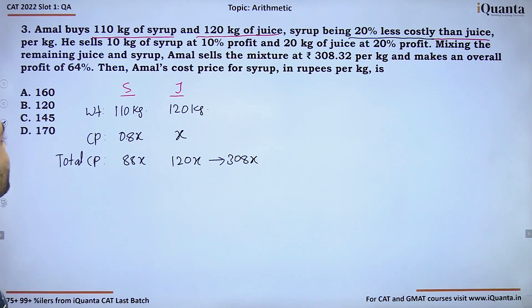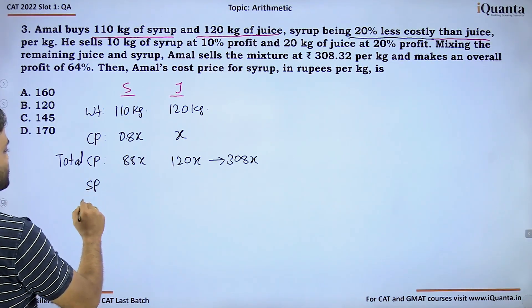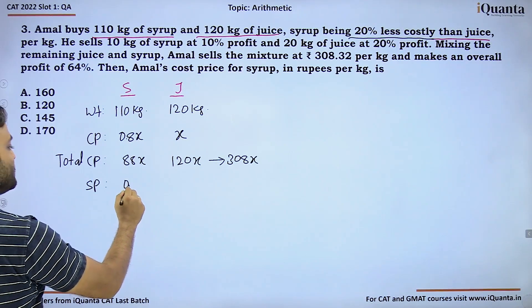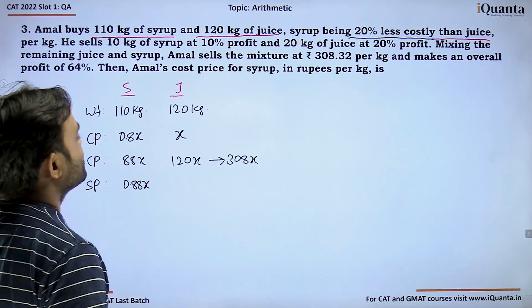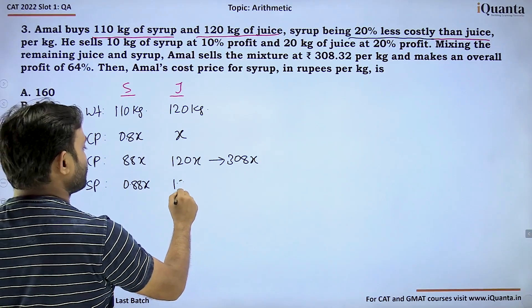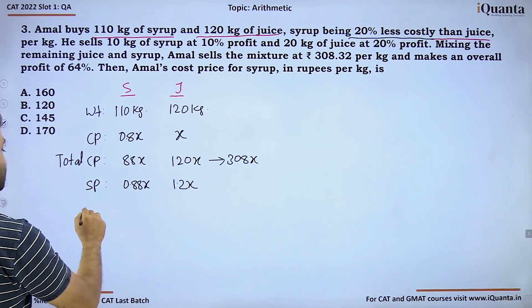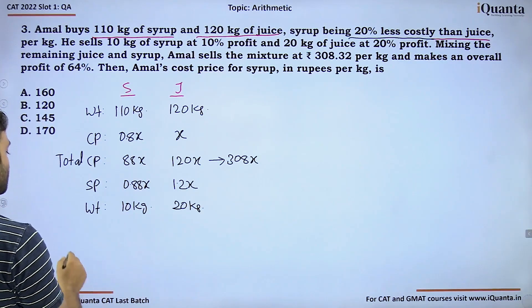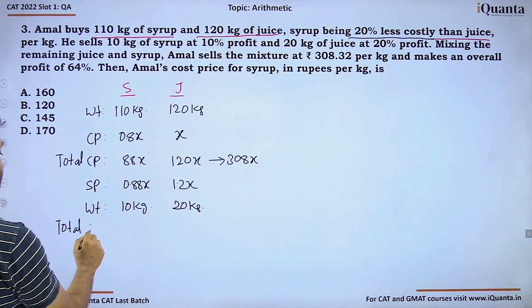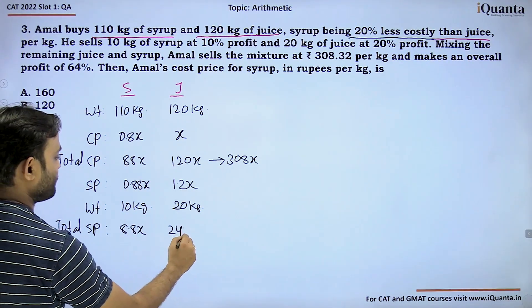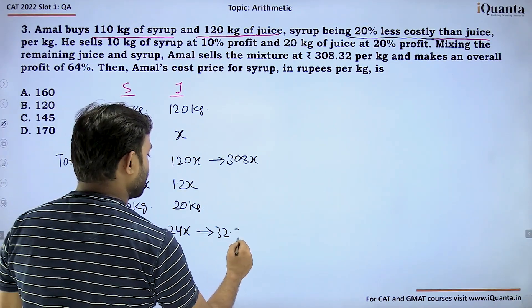He sells 10 kg of syrup at 10% profit and 20 kg of juice at 20% profit. So first selling price is 0.88x per kg for 10 kg giving 8.8x, and 1.2x per kg for 20 kg giving 24x. Together this becomes 32.8x.